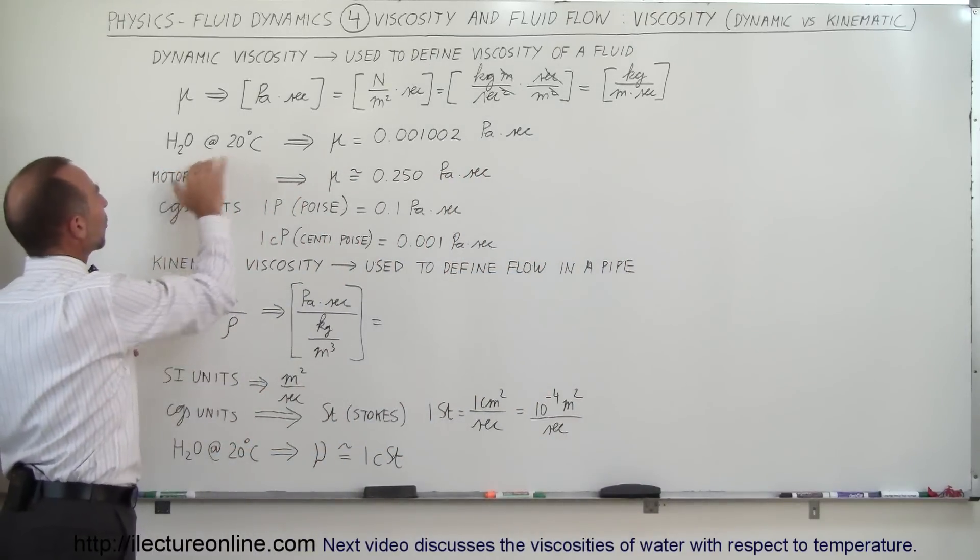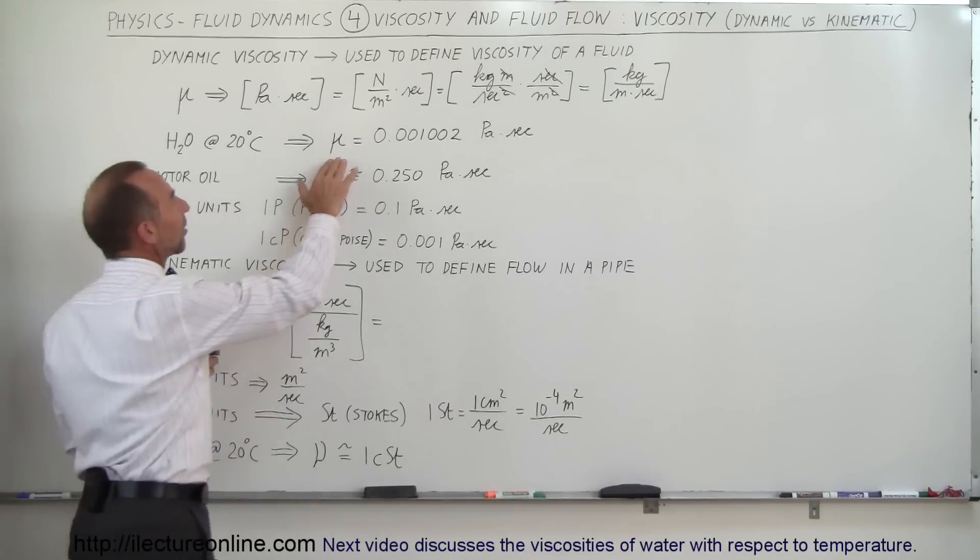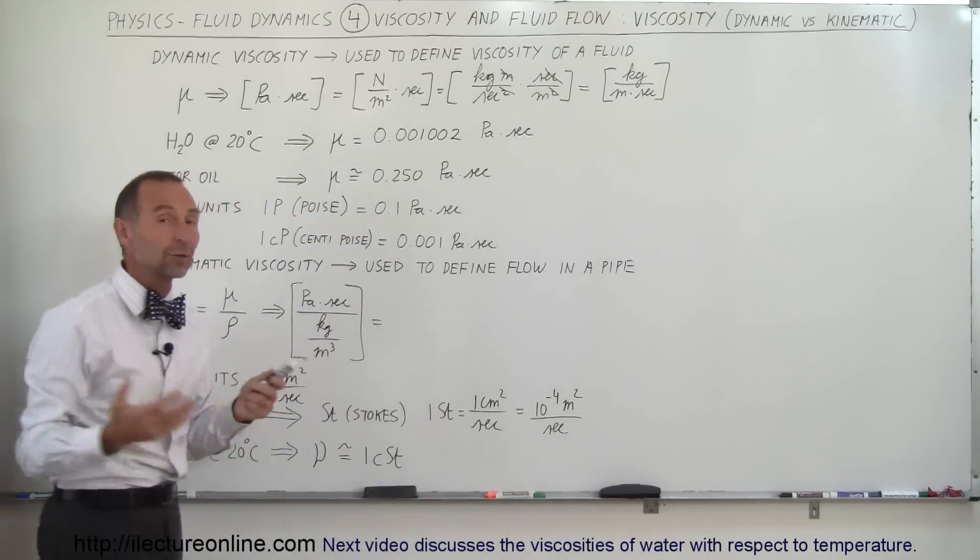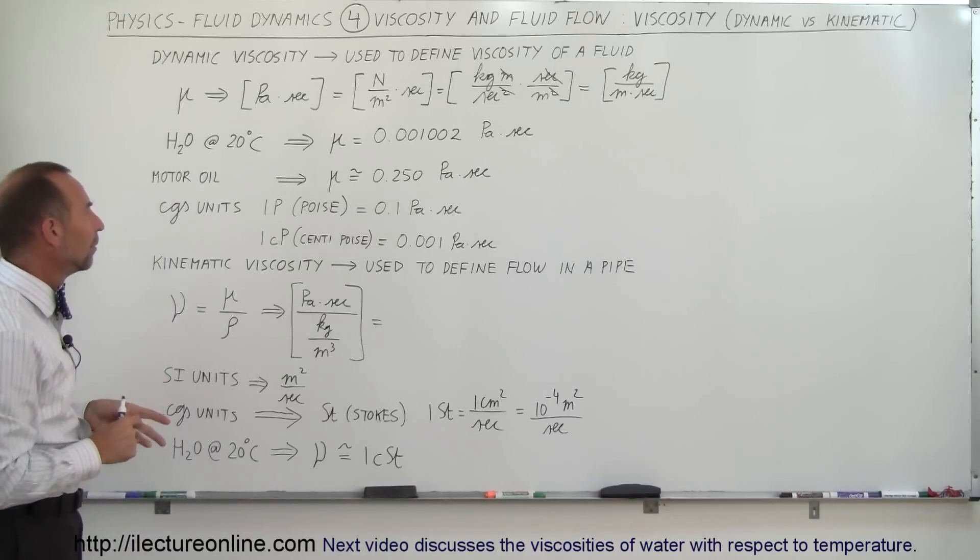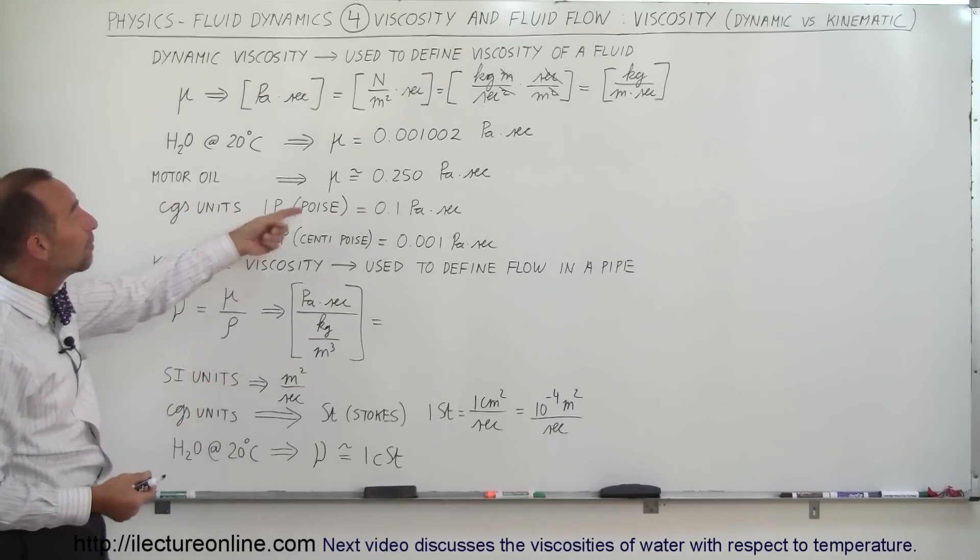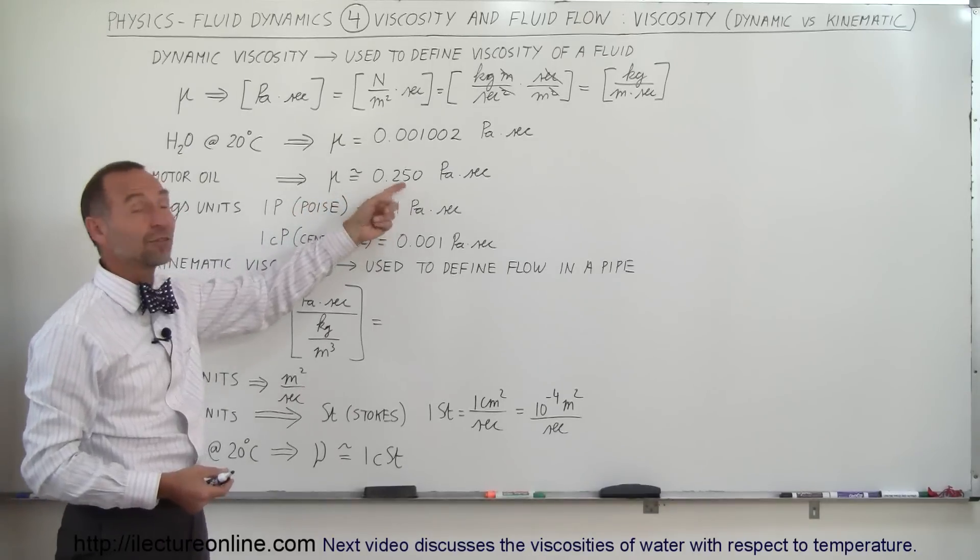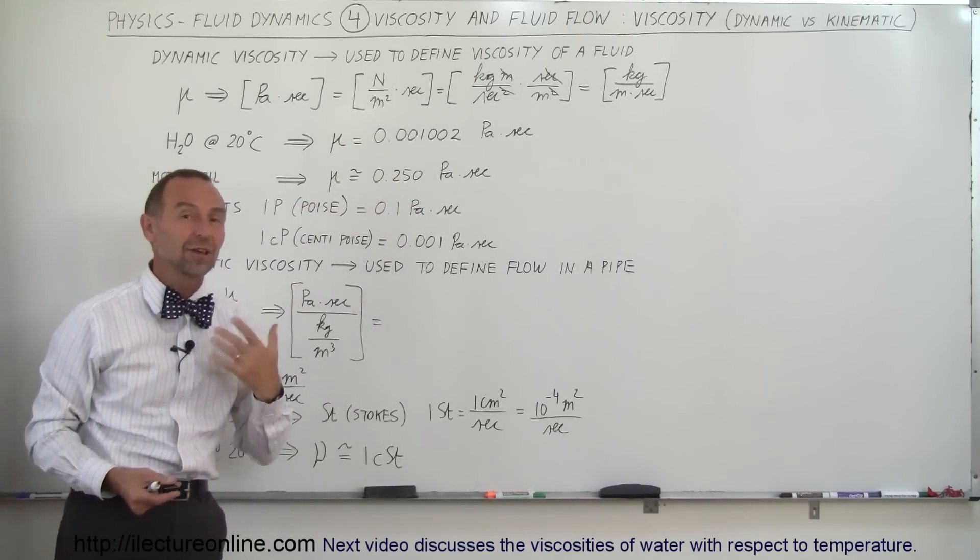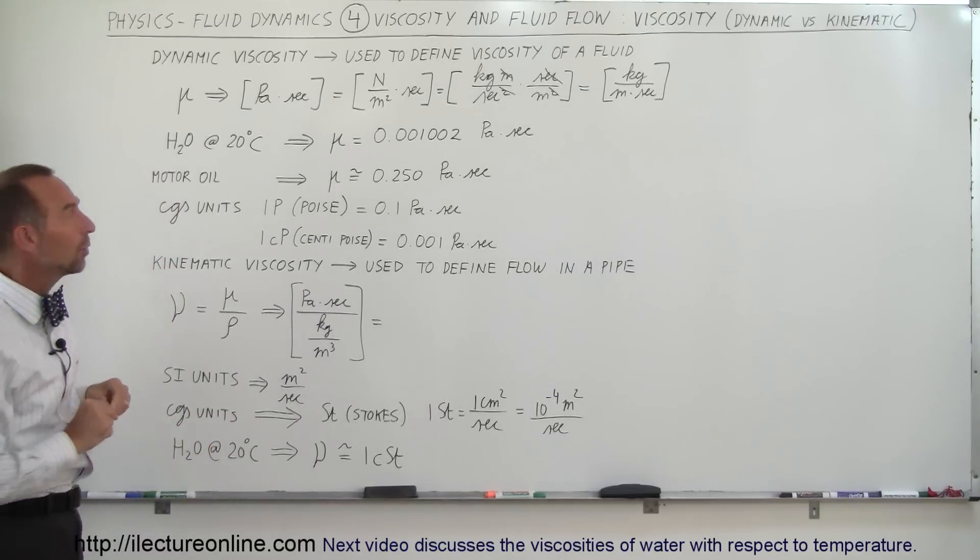Notice that for water at 20 degrees centigrade, the viscosity is 0.001002 pascal times seconds, or kilogram meters per second. Motor oil, and of course there's different kinds of motor oil, is approximately 0.250. So you can see that the viscosity of motor oil, on average, is about 250 times as viscous as the viscosity of water at 20 degrees.